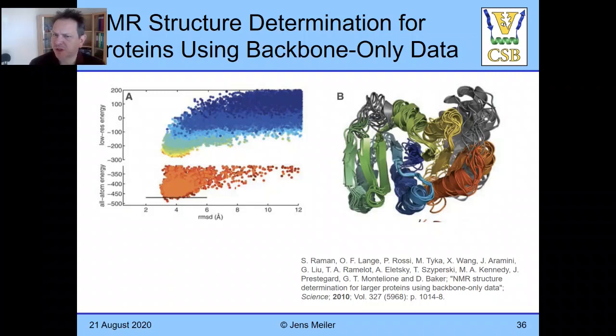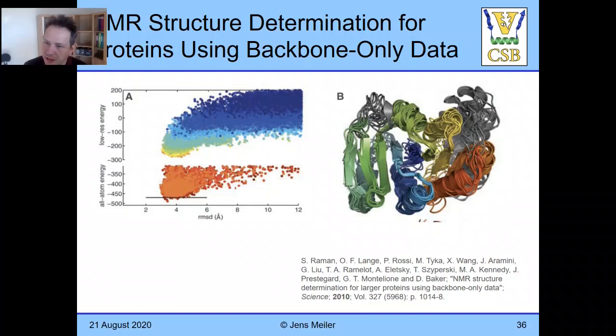In this figure showing rounds of iterative refinement, starting from blue going to red, you see a low-resolution to high-resolution progression. You really see this energy funnel that pulls you towards around 3 angstrom RMSD, which for a protein of this size is a very accurate prediction.